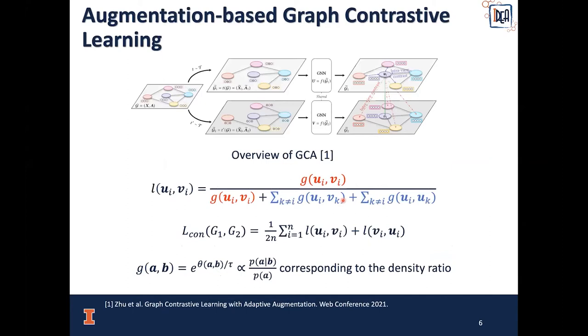In detail, this data augmentation-based Graph Contrastive Learning method has the following objective. u_i and v_i are the node embeddings of node i in two views separately, where g is a measurement of similarity. The objective function is to maximize g(u_i, v_i) against all similarities of negative samples, such as g(u_i, v_k) and g(u_i, u_k). The similarity measure g(a, b) is usually set as e to the theta(a,b) divided by tau, where theta is the cosine similarity and tau is the temperature.